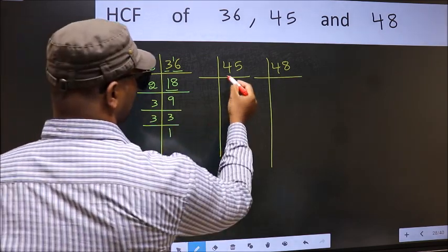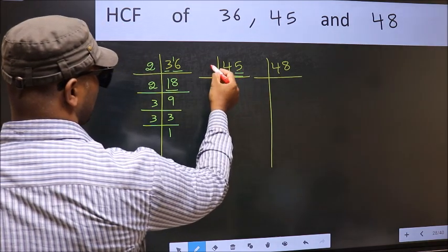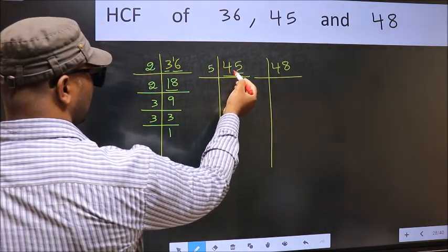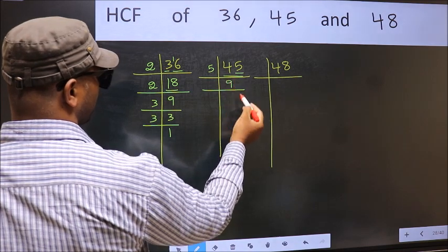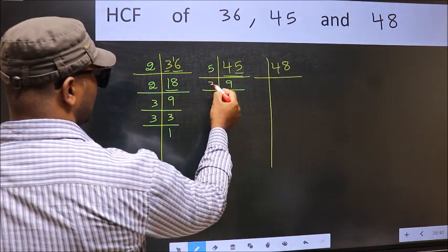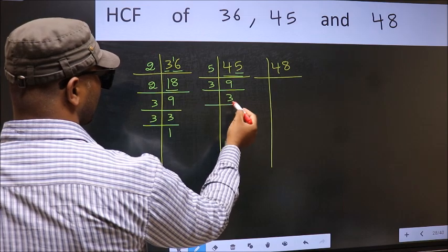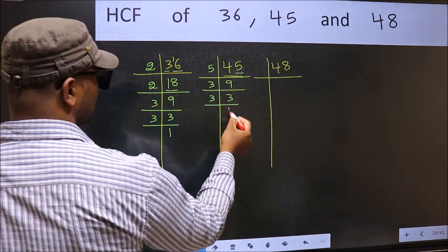Now the other number, 45. Last digit 5, so take 5. When do we get 45 in 5 table? 5 times 9 is 45. Now 9 is 3 times 3. Now 3 is the prime number, so 3 times 1 is 3.